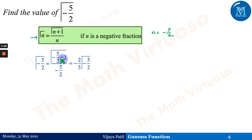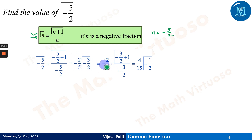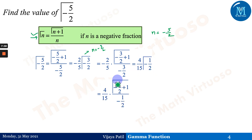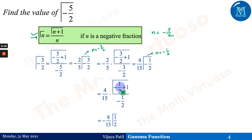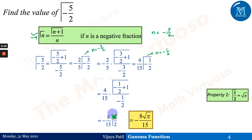Since minus 3 by 2 is also a negative fraction, we apply the same formula again with n equals minus 3 by 2, and then again with n equals minus 1 by 2. This gives 4 by 15 times gamma of minus 1 by 2, which further reduces to minus 8 by 5 times gamma of 1 by 2. Using property 2, gamma of 1 by 2 equals root pi, so the answer is gamma of minus 5 by 2 equals minus 8 root pi divided by 15.